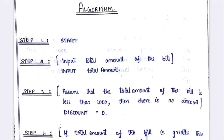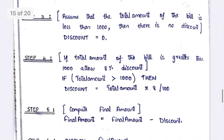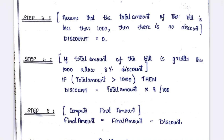Let us see the algorithm. Step one: start. Step two: input the total amount. Step three: if the total amount is less than 1000, then there is no discount. Step four: if the total amount is greater than 1000, then the user gets an 8% discount.